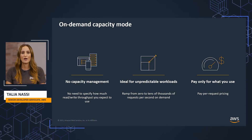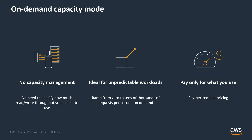For tables using on-demand mode, DynamoDB instantly accommodates customers' workloads as they ramp up or down to any previously observed traffic level. If the traffic hits a new peak, DynamoDB adapts rapidly to accommodate the workload. This eliminates the trade-offs of over-provisioning, where you waste money by paying for excess capacity, and under-provisioning, which affects your availability.